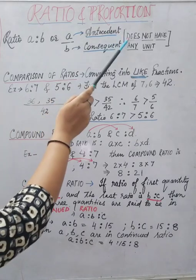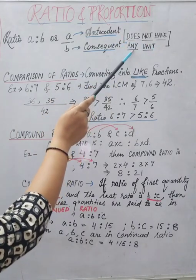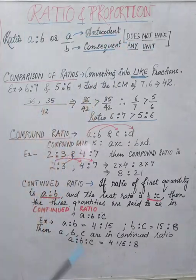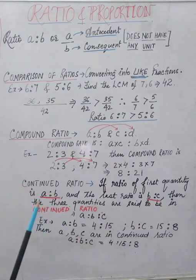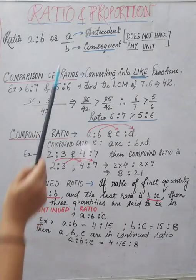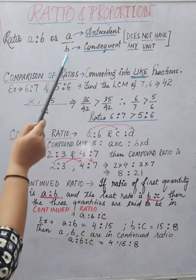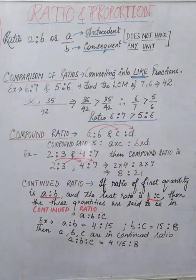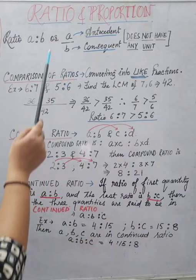Children, ratio does not have any unit. That means whenever you are converting into a ratio, you should not write any unit. This is because when we represent in the form of a ratio, both a and b must be in the same unit, so the unit gets cancelled and we are left with no unit.